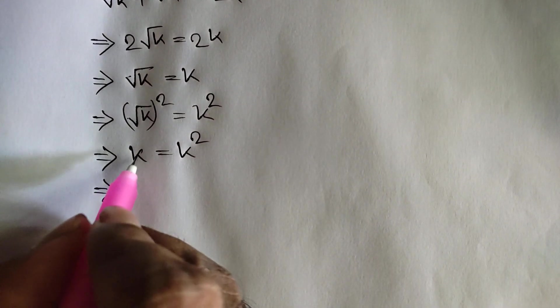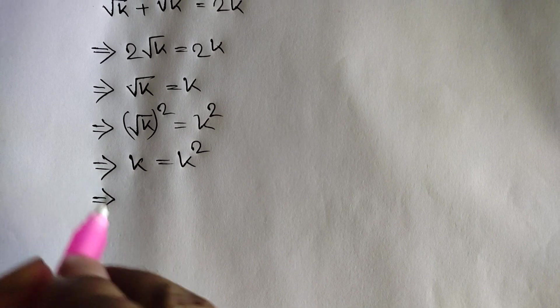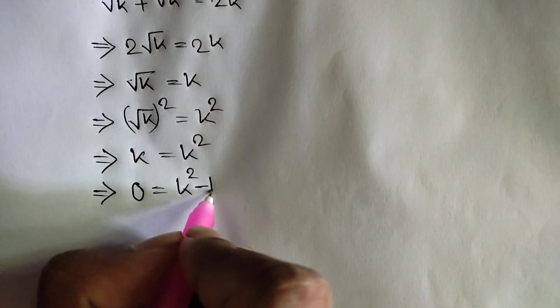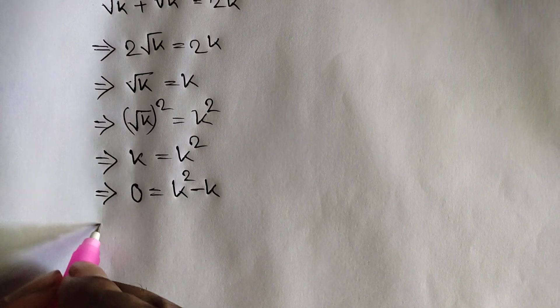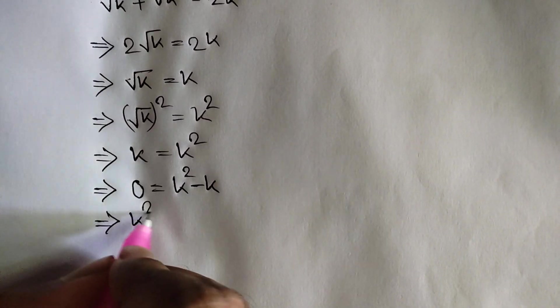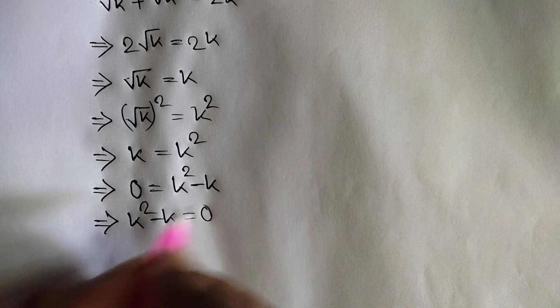Taking k to the right side, we will get 0 is equal to k square minus k. Now exchanging sides, we can write k square minus k is equal to 0.